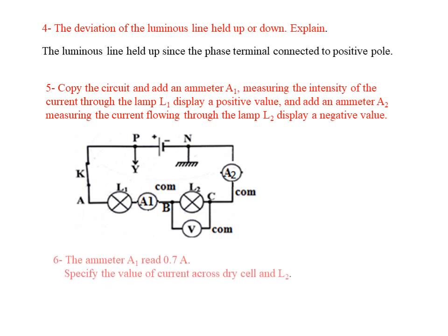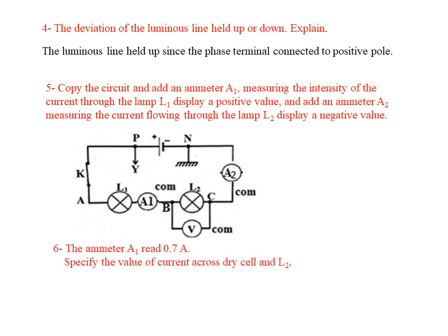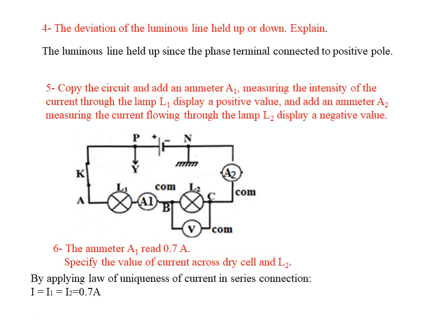Ammeter A1 reads 0.7 amperes. Specify the current through lamp L2. By using the law of uniqueness of current in a series connection: I = I1 = I2 = 0.7 amperes.